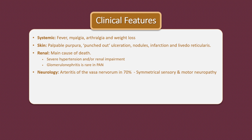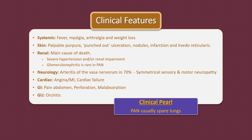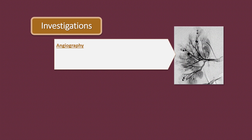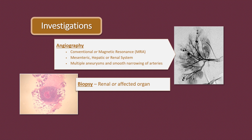Polyarteritis nodosa can also present with features of cardiac, gastrointestinal and genitourinary system involvement, and usually spares the lungs. Regarding investigations, the diagnosis is confirmed by conventional or magnetic resonance angiography, which shows multiple aneurysms and smooth narrowing of mesenteric, hepatic or renal systems, or by biopsy of the affected organ or renal biopsy, which reveals necrotizing inflammation of medium-sized arteries and vessel occlusion.